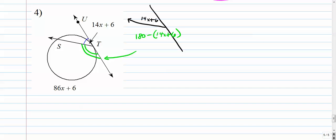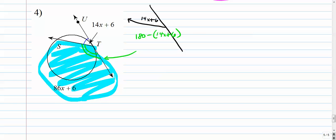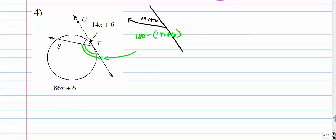Alright. So now we're really going to just focus on this whole side over here. So this whole side of the problem now is going to be the angle is equal to the arc over 2. Well, this time the angle is 180 minus 14x plus 6. So we're actually talking about this angle now. Equals the arc, 86x plus 6 over 2.